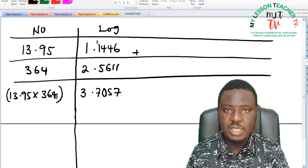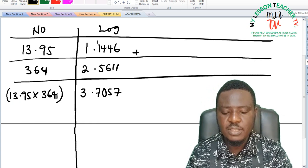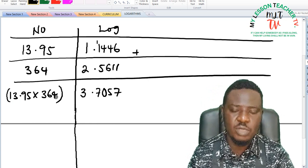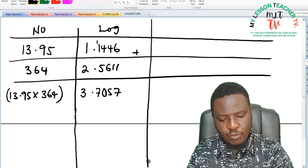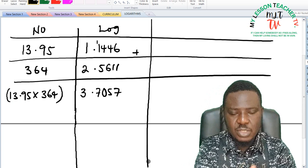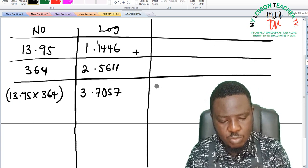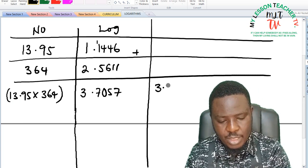So 13.95 times 364 in number is equivalent to 3.7057 in logarithm. I will then go to the base, but before then I will have to move this to the next column, so this is 3.7057.